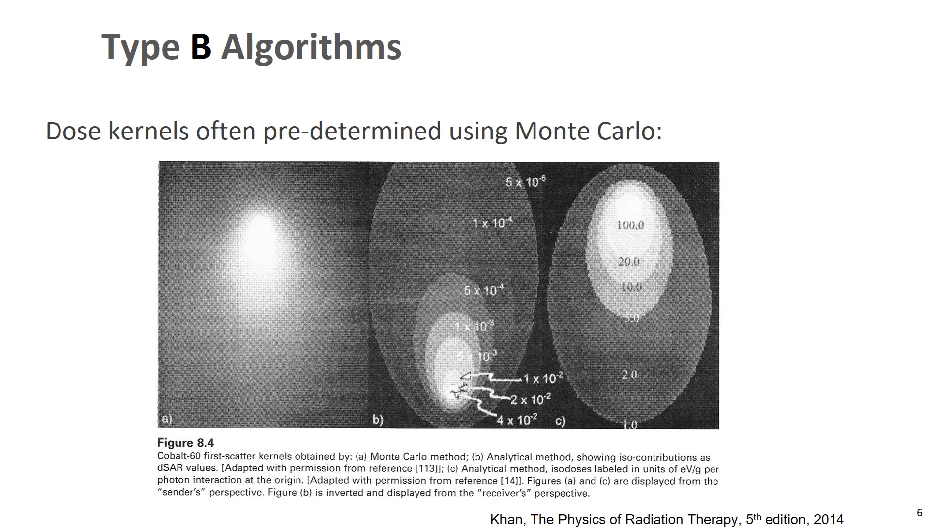So for a dose convolution superposition algorithm, what exactly is the dose kernel? Well, the dose kernel represents the energy spread resulting from interactions at a given point or line. So you can have a kernel for either a line or a point. And the energy spreads because charged particles and scattered photons carry energy away from the site of that primary interaction.